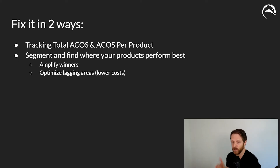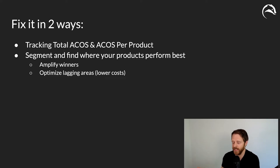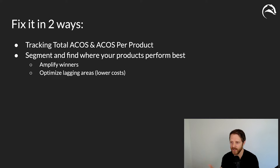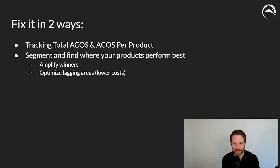You also don't want to be distracted by averages at the product level, because you might have that one product spread across five, six, seven, eight ad groups across ten different campaigns. If that product has a 15% ACOS above your 10% target, don't do something drastic like stop advertising it entirely.